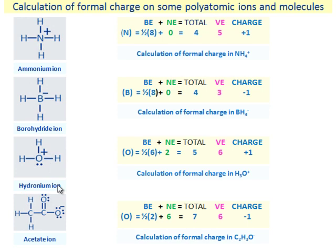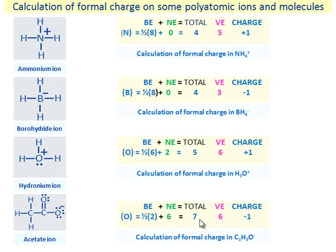In the hydronium ion, the oxygen atom carries half of 6 bonded electrons plus 2 non-bonded electrons, a total of 5 electrons. Since it has 6 valence electrons, it carries a positive charge. In the acetate ion, the oxygen atom carries half of 2 bonded electrons plus 6 non-bonded electrons, a total of 7 electrons. Since it has only 6 valence electrons, it carries a negative charge.